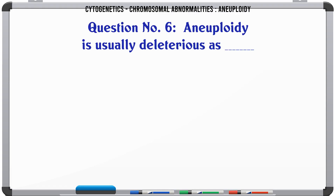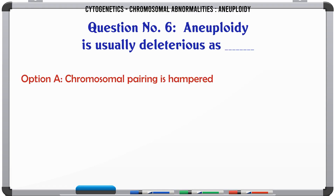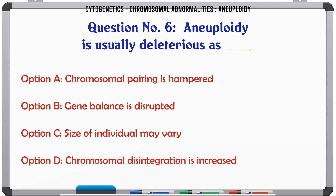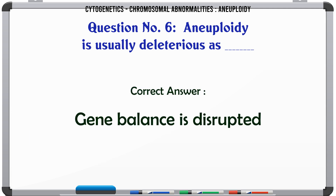Aneuploidy is usually deleterious because: a. Chromosomal pairing is hampered. b. Gene balance is disrupted. c. Size of the individual may vary. d. Chromosomal disintegration is increased. The correct answer is gene balance is disrupted.